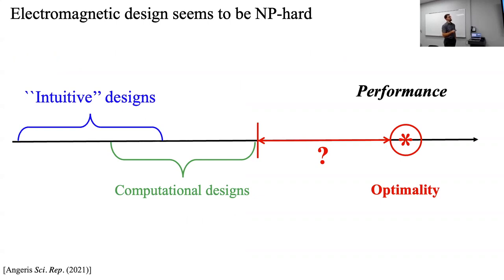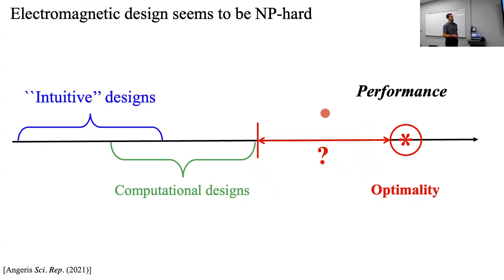Condensed onto a diagram: what has happened with inverse design is that we've gone above what we can do intuitively. Computational design does much better than high-symmetry intuitive structures. But we don't know how it relates to optimality—we don't know if these computational design structures are actually good or just some other structure. Trying to reduce the gap between known optimal performance and what computational devices achieve is what I'll spend the rest of the talk on.